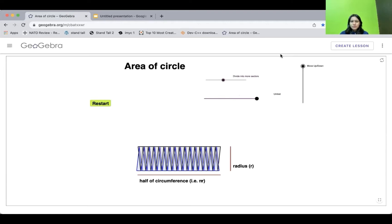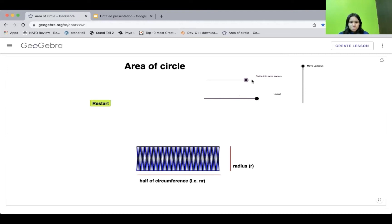Now when we divide the circle into infinite sectors like this, here we go. It resembles a parallelogram. So the answer to the question is, the circle should be divided infinite times so that it resembles a perfect parallelogram.